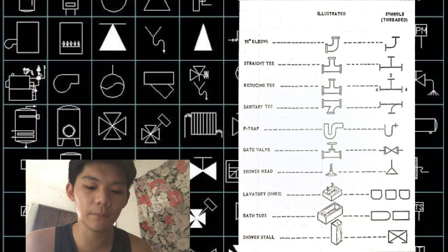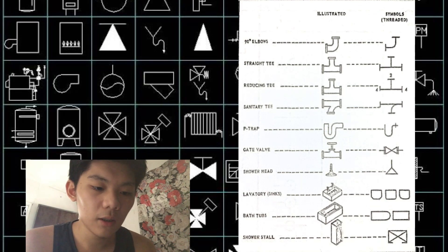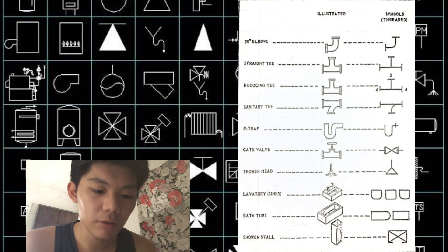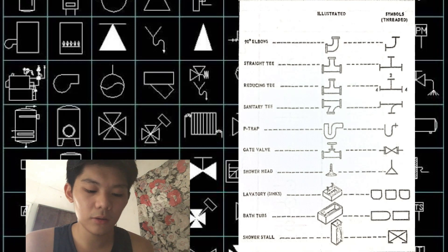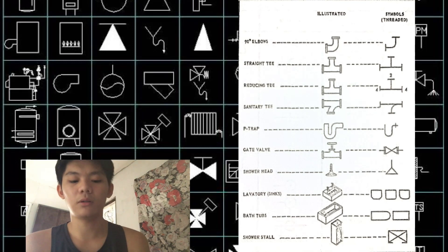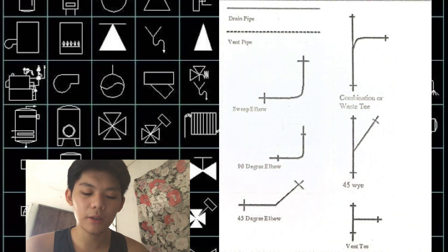These are the symbols of pipes and other fittings: 90-degree elbow, straight T, reducing T, sanitary T, P-trap, gate valve, shower head, lavatory or sinks, bathtubs.